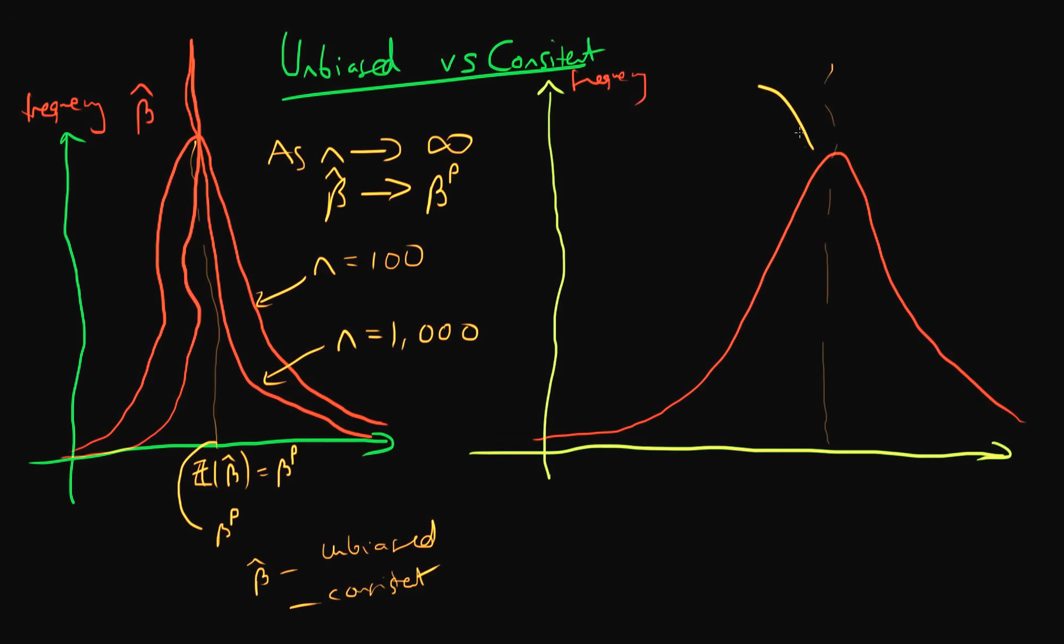So this is a frequency distribution which we get from applying an estimator, let's call it beta tilde, to different sample data, and that has an expectation - let's call it beta tilde star.